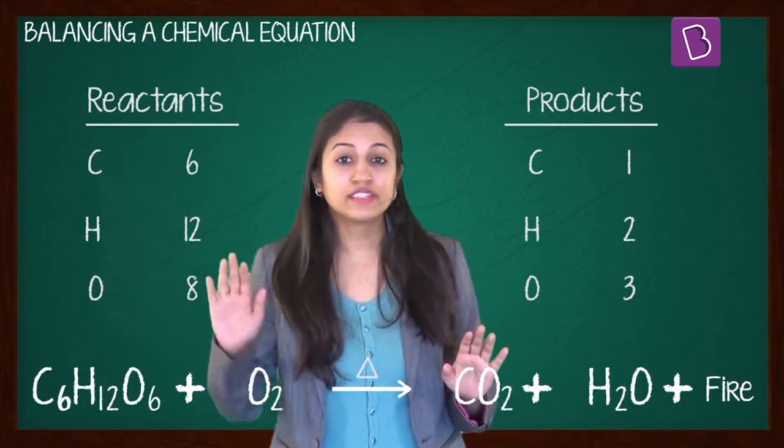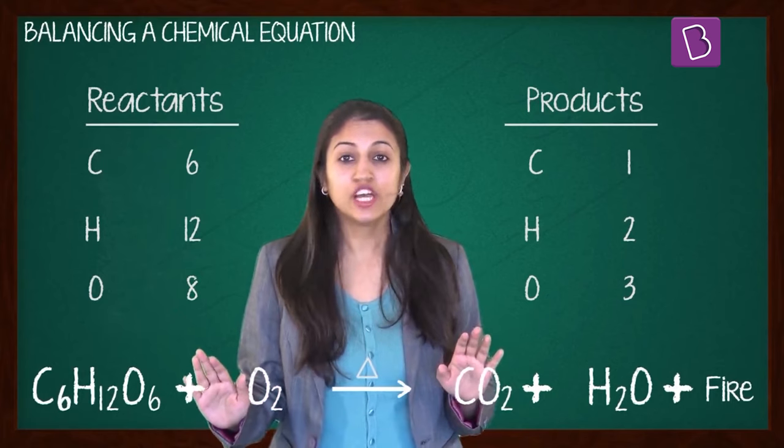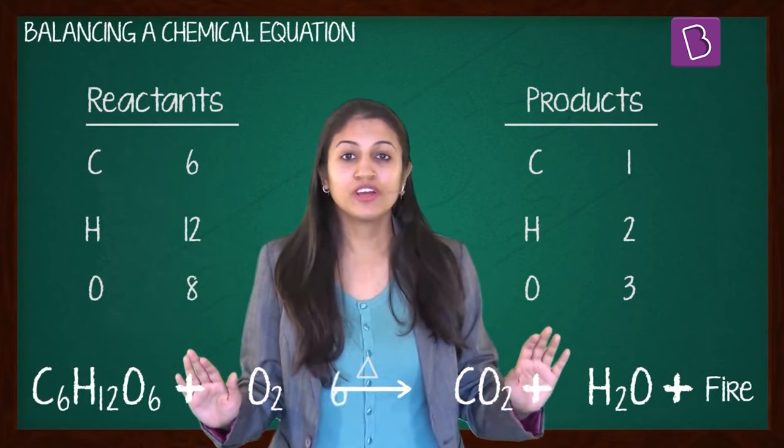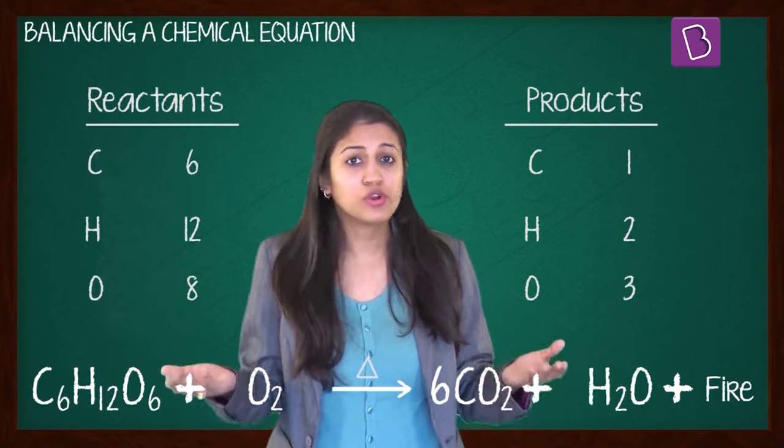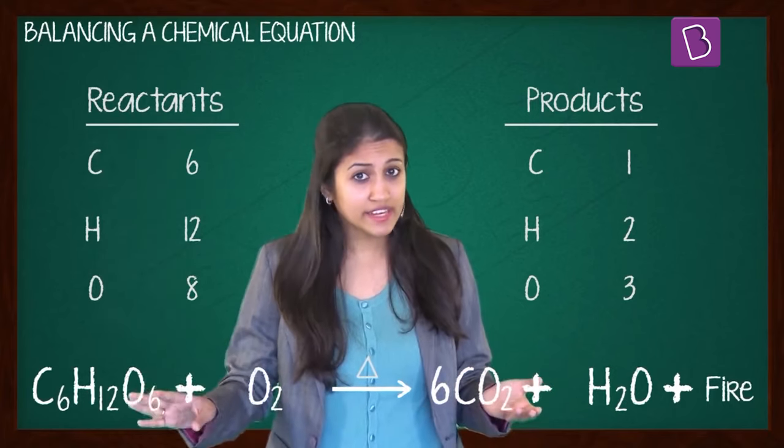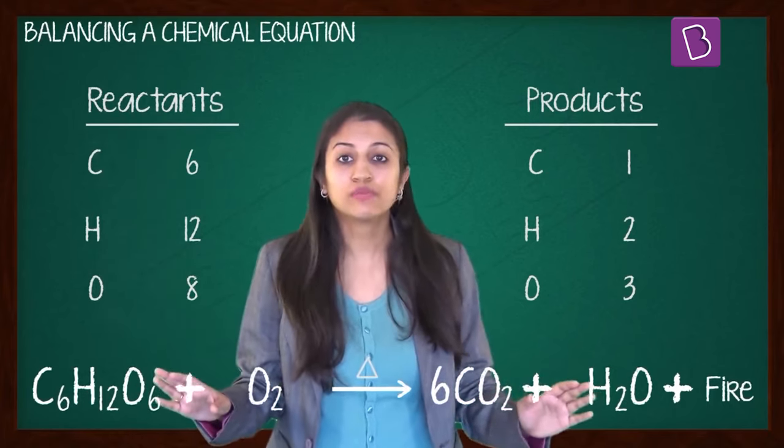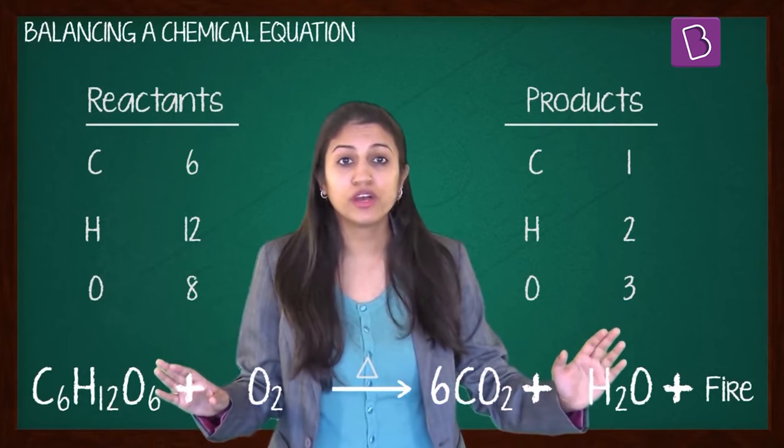You can clearly see that there are 6 atoms of carbon in the reactant. So let's add 6 of them in the product. So carbon gets balanced. But what about oxygen? You still have 8 in the reactant and 13 in the product, 12 from here and 1 from here.